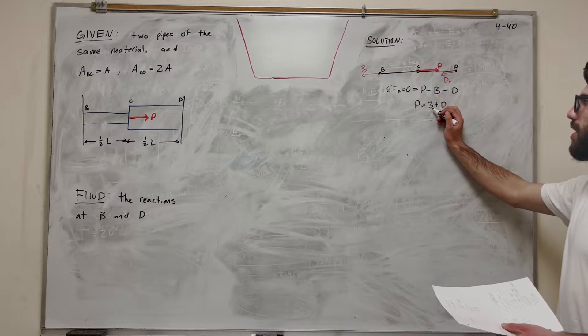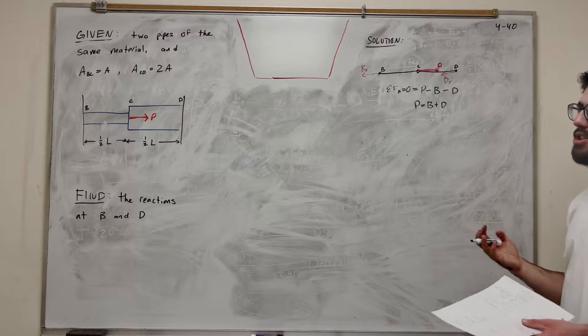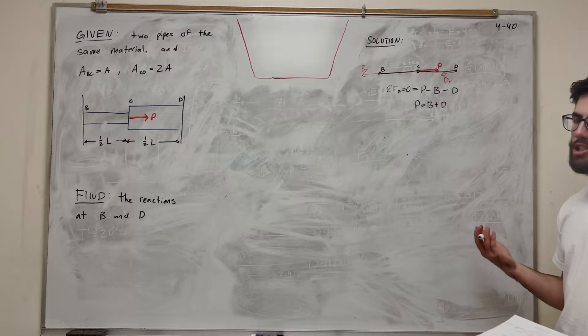Okay, so this is cool and all, but we have two unknowns, B and D. We want to know what B and D are separately from each other. In order to do that, we're going to need to do our displacement.